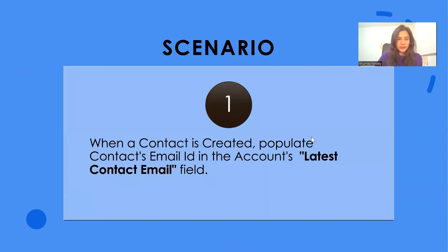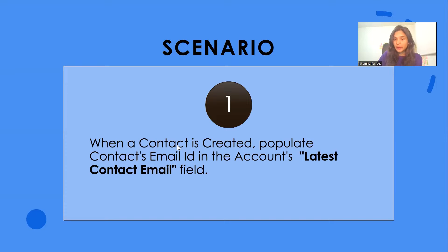The scenario is: when a contact is created, populate the contact's email ID in the account's 'Latest Contact Email' field. I'm going to create this custom field on account and name it 'Latest Contact Email.' Whenever I create a contact on any account and provide an email ID, that email ID should get stamped on the account. So account is the parent and contact is the child. Let's go ahead and start with creating the field.